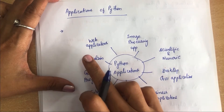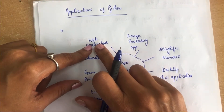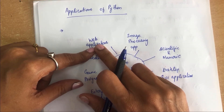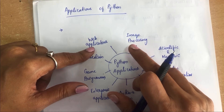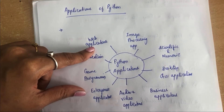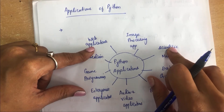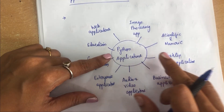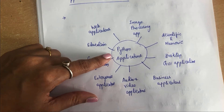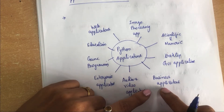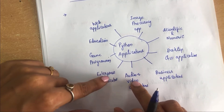These are the applications of Python. Python can be used for a variety of applications. It can be used to develop web-based applications and to work with images — if you want to do image enhancement or modification, Python can help. It is also used for scientific and numeric applications, GUI-based applications, and business software.